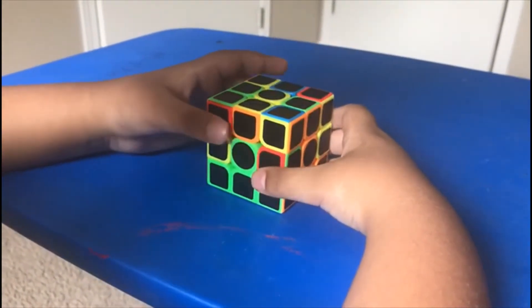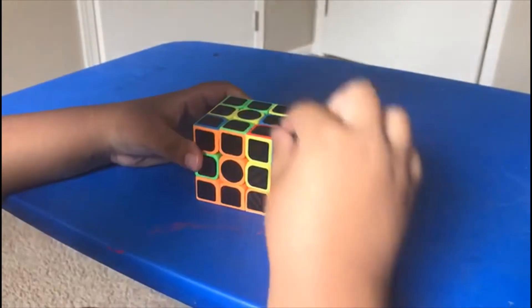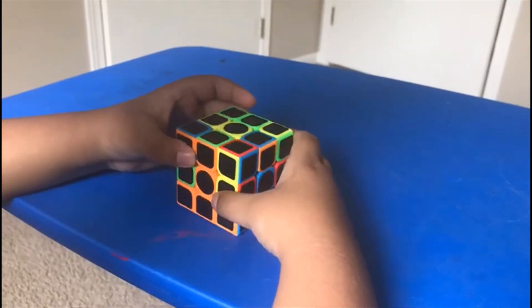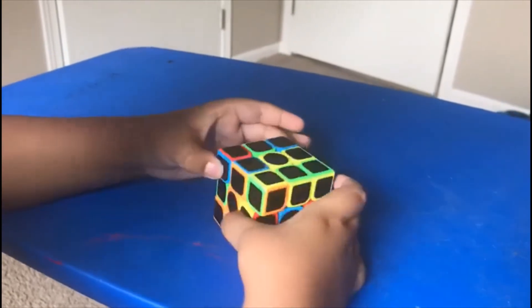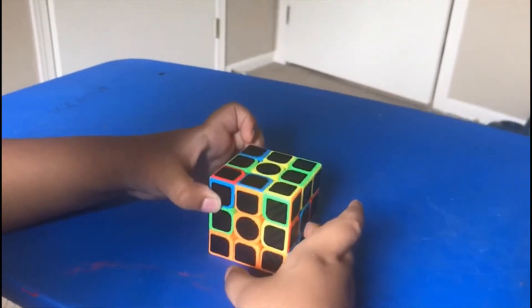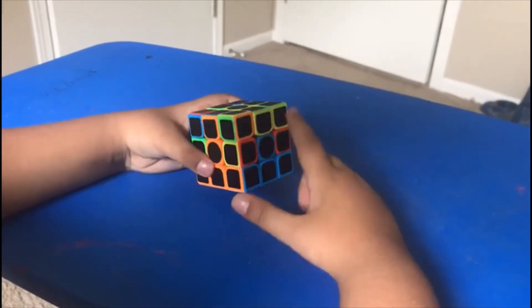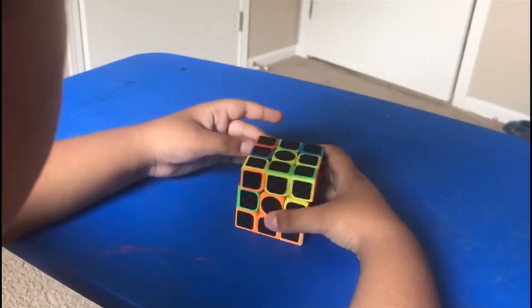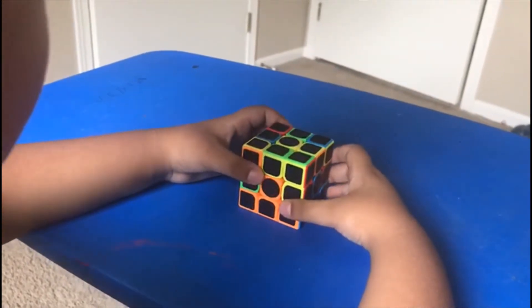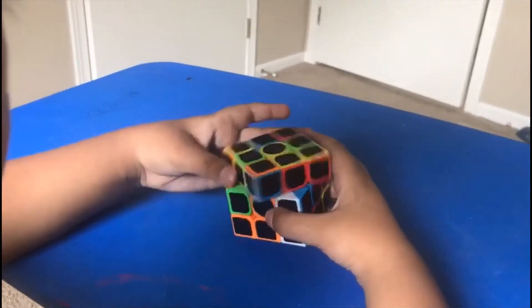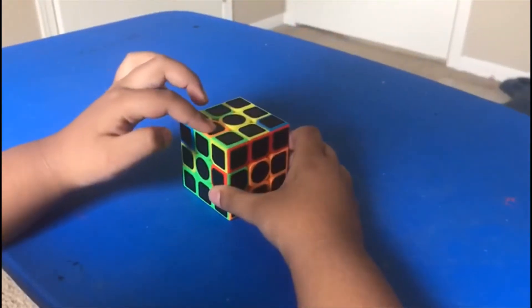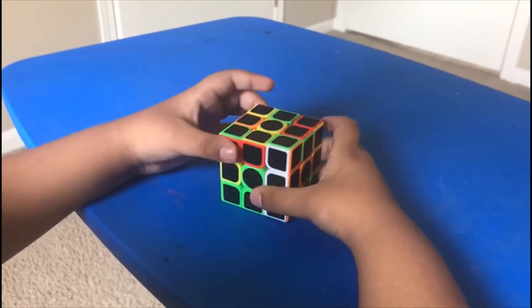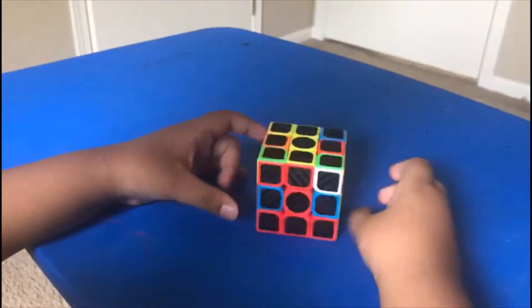We gonna solve the middle layer. Look at the non yellow pieces. Match the color. Top piece match with this piece. Do rotate the top and do a right trigger. This color match with this side. Protect the top and do a right trigger. Fix this white.